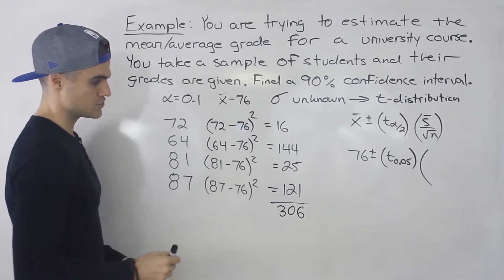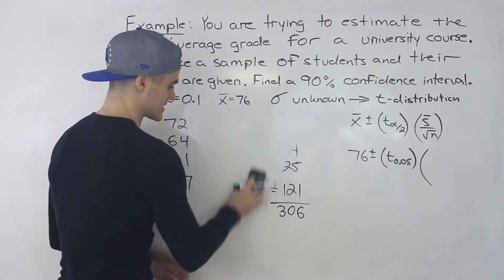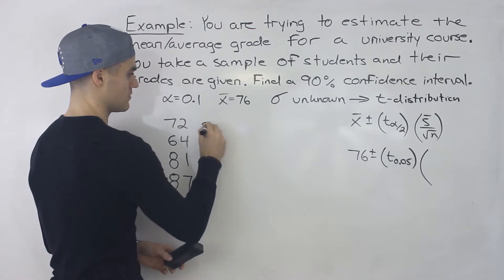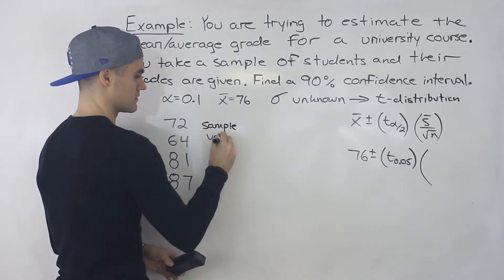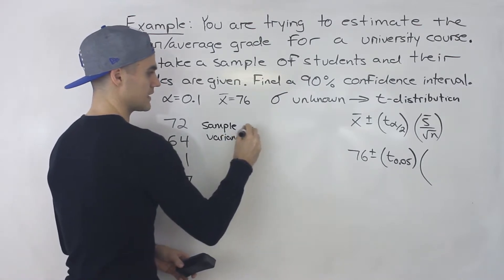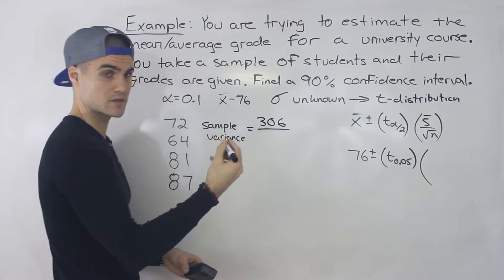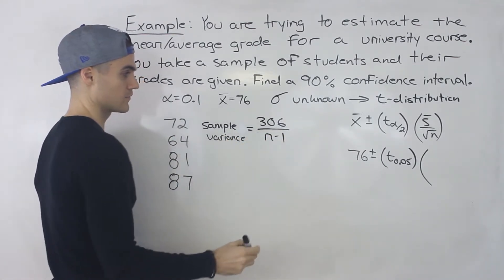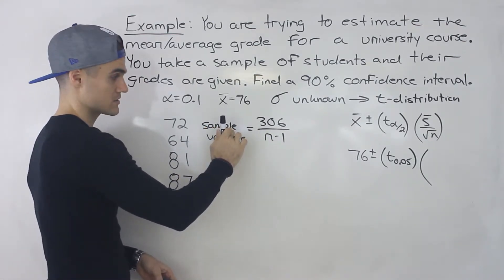And so once you have that number, that's the sum of the squared deviations, you can find the sample variance. So the sample variance is going to equal that number that we got, the sum of the squared deviations, over n minus 1. We got to subtract 1 in the denominator if we're looking for the sample variance.